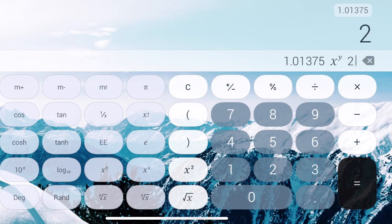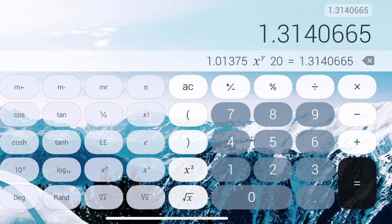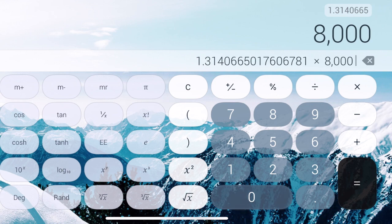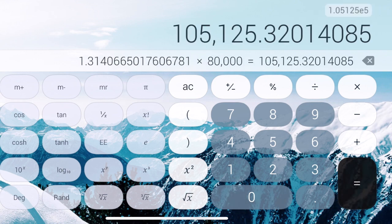And then whatever number you get there, it should be one point something. You're going to take that number times your 80,000. That will get you the total amount of money that you would be paying on that loan with the interest included.